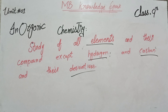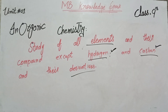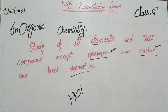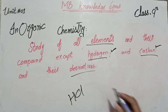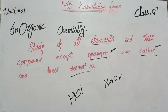The remaining elements and their compounds — excluding carbon and hydrogen — are studied in inorganic chemistry. In the periodic table there are many elements; all elements other than carbon and hydrogen fall under inorganic chemistry. For example, NaCl is an inorganic compound, and NaOH is also an inorganic compound. Compounds that do not contain carbon and hydrogen are inorganic chemistry.